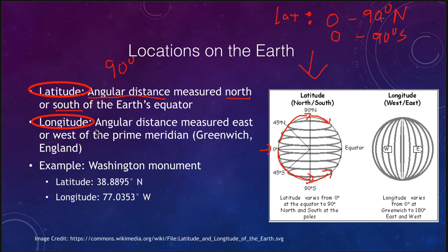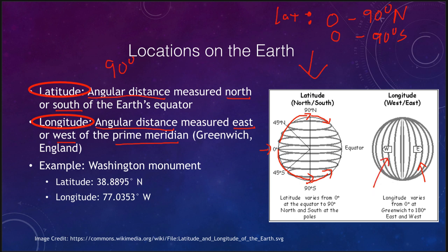Longitude is also an angular distance — both latitude and longitude are angle measures. Longitude is measured east or west of what we call the prime meridian. A meridian is a line forming a great circle on the Earth that passes through the two poles and is therefore centered on the center of the Earth. We select one to be the prime meridian, because we need a reference point to measure everything from.